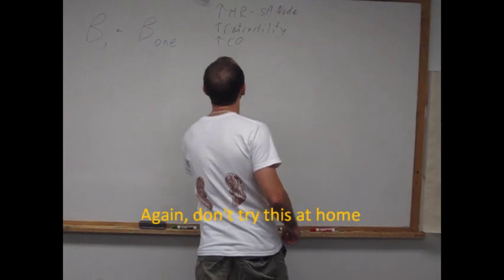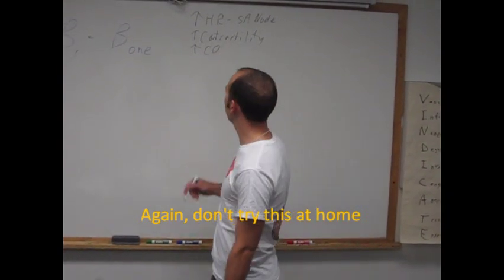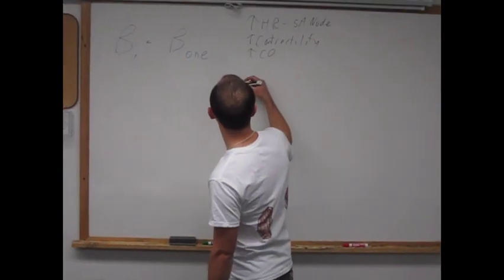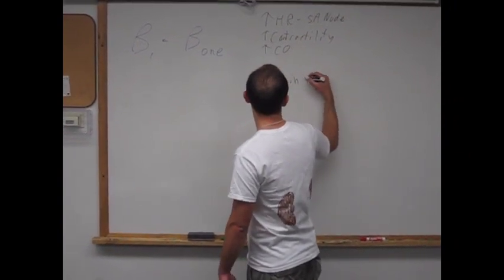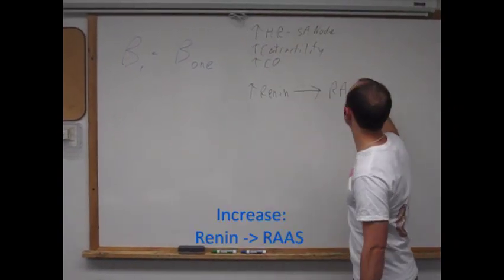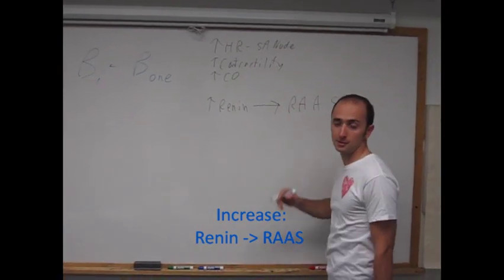So, now what am I doing? Now I'm attacking, let's say I'm attacking my juxtaglomerular cells, so it can increase renin, and lead to the whole renin-angiotensin-aldosterone system.